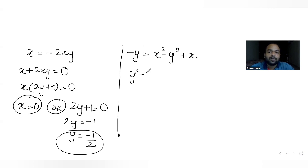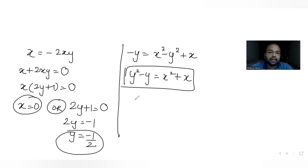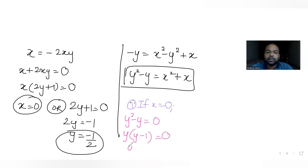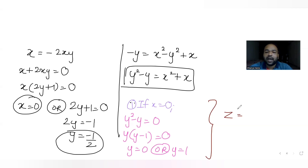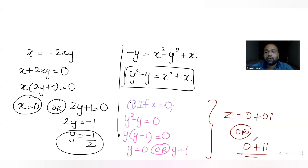Now substituting these into the imaginary part condition. From the imaginary equation: y² minus y equals x² plus x. For the first case, putting x equals 0: y² minus y equals 0, so y·(y minus 1) equals 0, giving y equals 0 or y equals 1. That gives complex numbers z equals 0 or z equals i.